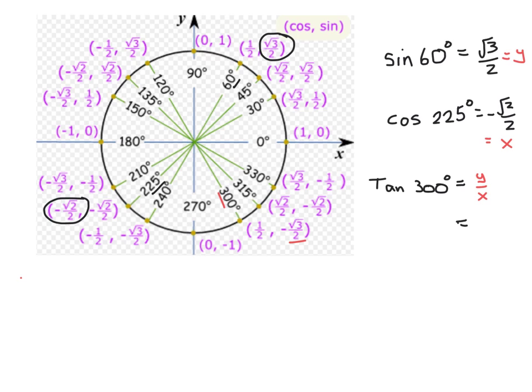So we get negative root 3 over 2 divided by the x value, 1 over 2. And if we divide by a fraction, we get negative root 3 over 2 multiplied by the reciprocal, 2 over 1. All the 2's cancel out. And we get the answer negative root 3.